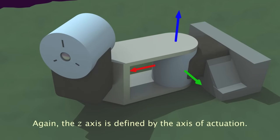Now, if we add another joint, we can determine the transformation between them. As before, the z-axis points along the axis of rotation.